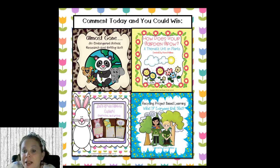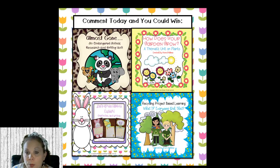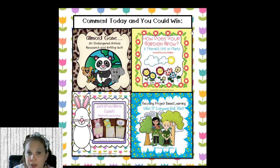These are the resources you can win today if you are commenting. We have four different resources: the Endangered Animal Research and Writing Unit — great if you're doing research in April — where kids make lap books and do research and writing. You can also win the How Does Your Garden Grow thematic unit on plants, which is jam-packed with plant and plant life cycles, parts of plants, plant writing, research, and science investigations.